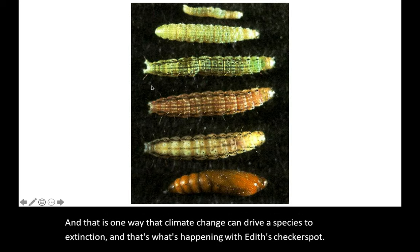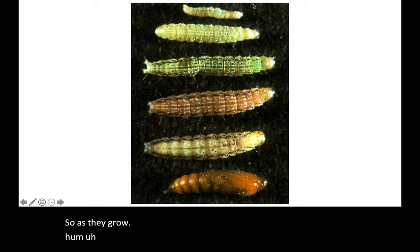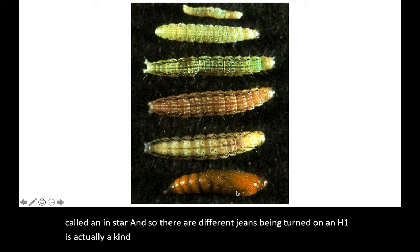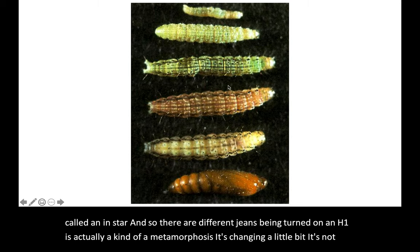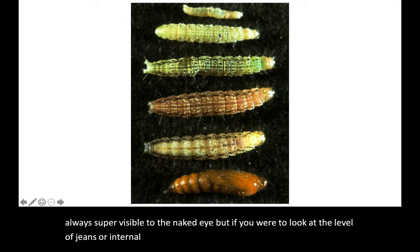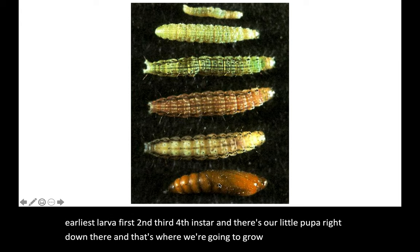That is one way that climate change can drive a species to extinction, and that's what's happening with Edith's checkerspot. As they grow, Edith's checkerspots go through a lot of different stages called instars, with different genes being turned on. Each one is actually a kind of metamorphosis — it's changing a little bit. At the level of genes or internal anatomy, you can see the changes from the first through fourth instar, and there's our little pupa right down there, where they grow their wings and get ready to fly.